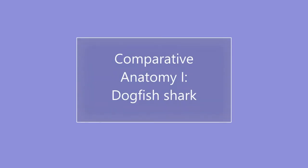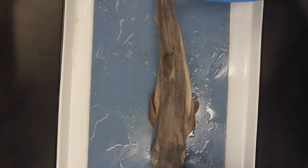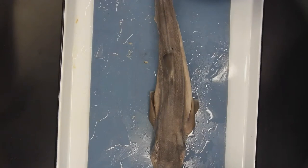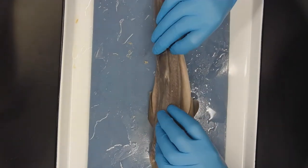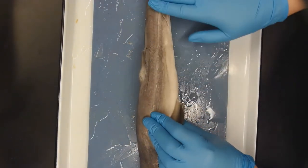Hey everyone! Welcome back to your TA dissection corner, and today I'm going to show you the major structures of the digestive system in the dogfish shark. Now dogfish sharks are vertebrates that belong to the class Chondrichthyes, otherwise known as cartilaginous fishes.